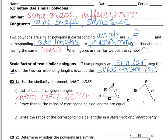Now, prove that all the ratios of the corresponding side lengths are equal. If the figures are similar, their ratios are going to be the same. You get a ratio by setting up a fraction and reducing it. If two polygons have the exact same ratio, we refer to that as the scale factor.